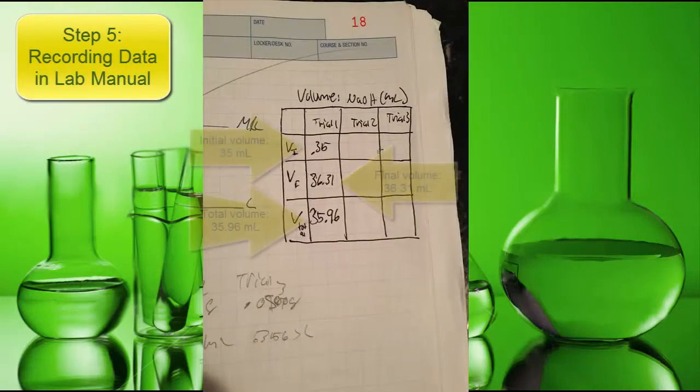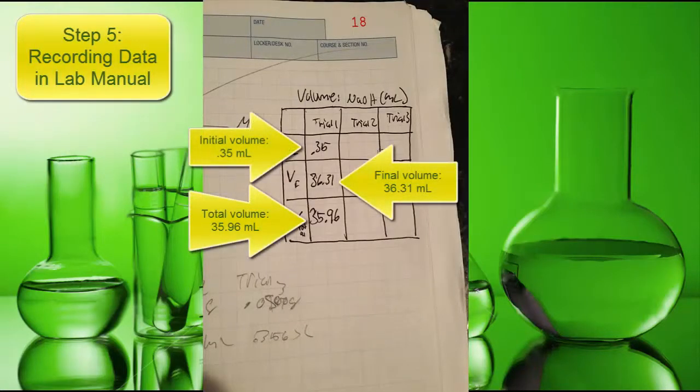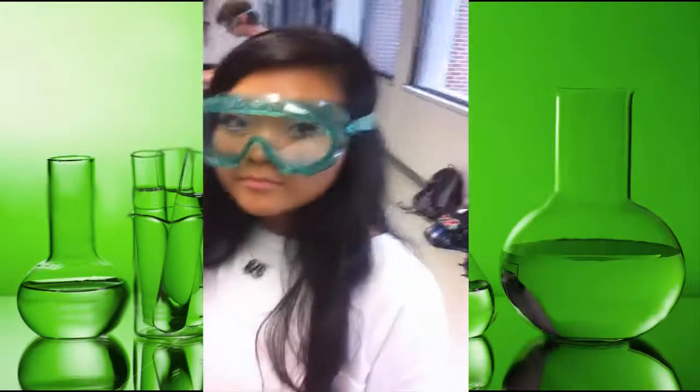Step 5: Recording the data in the lab manual. Our initial volume was 0.35 milliliters. Our final volume was 36.31 milliliters, which means our total volume is 35.96 milliliters.